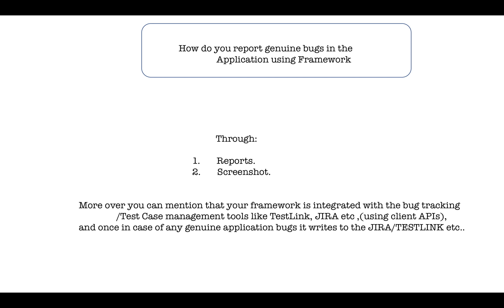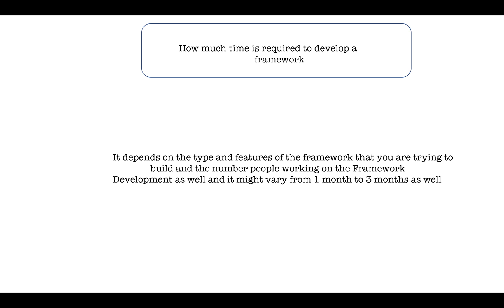How do you report genuine bugs to the business or development team? Mention that the framework has reports and screenshots, and wherever a genuine failure happens, the results can be posted directly to a test case management or bug tracking tool like JIRA or TestLink. These tools provide client APIs, and the framework integrates with them using those APIs to publish results directly.